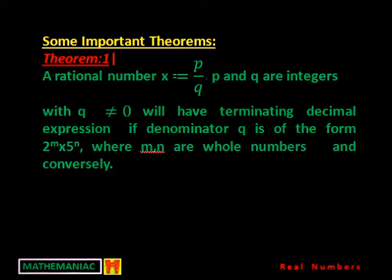A rational number x equal to p by q, where p and q are integers with q not equal to 0, will have a terminating decimal expression if the denominator q is of the form 2 to the power m into 5 to the power n, where m and n are both whole numbers. This result is true in the opposite direction also — the converse also. I will be explaining these things, so let us see what will be the actual meaning of this particular theorem.